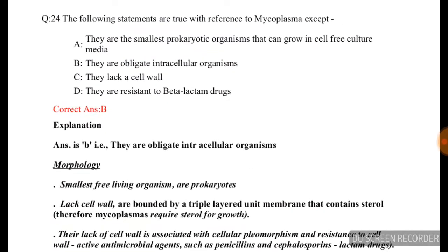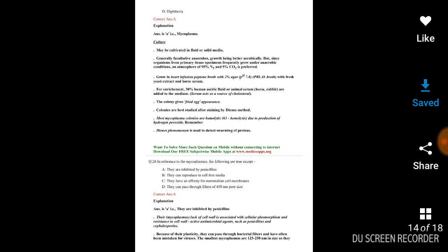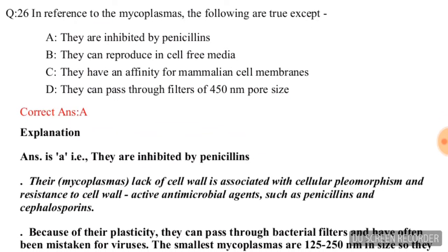Next question: the following statements are true with reference to mycoplasma except — A) they are the smallest prokaryotic organisms that can grow in cell-free culture media, B) they are obligate intracellular organisms, C) they lack a cell wall, D) they are resistant to beta-lactam drugs. The correct answer is B — they are obligate intracellular organisms — this is false.